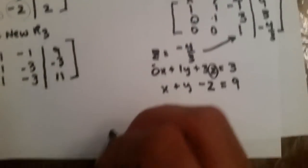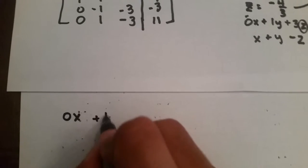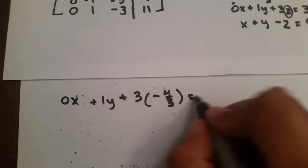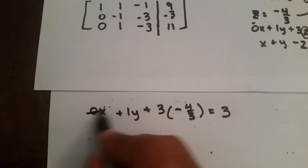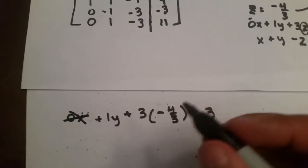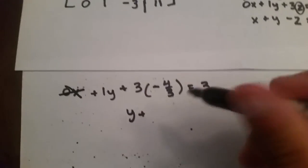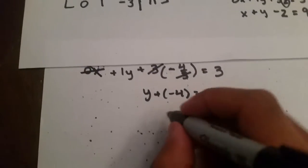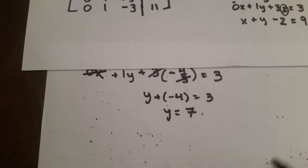So, our second equation would be 0x plus 1y plus 3 times negative 4 over 3, equal to 3. So, since it's 0x, we just eliminate that, it doesn't matter to us. So, we have y plus 3 times negative 4 over 3, which is negative 4, because the 3's cancel out, equal to 3. And we do y is equal to 7, because you just add 4 to both sides.